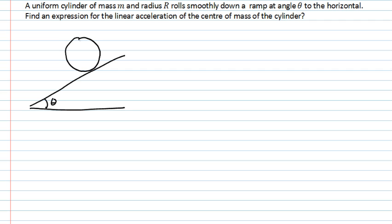What I want to find is the acceleration of the center of mass of the cylinder. So that's the linear acceleration of the central point of that cylinder as it rolls down the hill. And importantly, it's rolling smoothly down the hill, which means there's no kinetic forces of friction acting on my object, no sliding between the wheel and the surface.